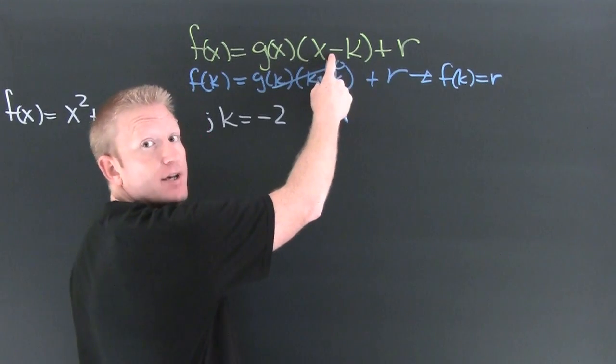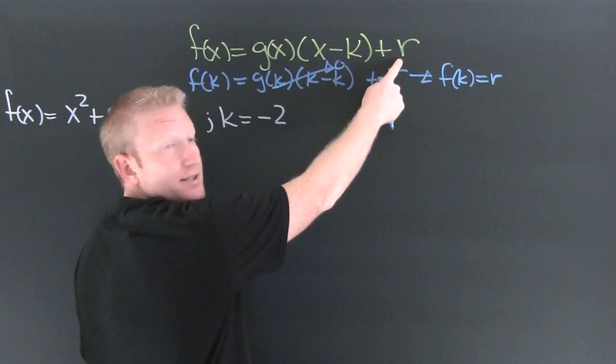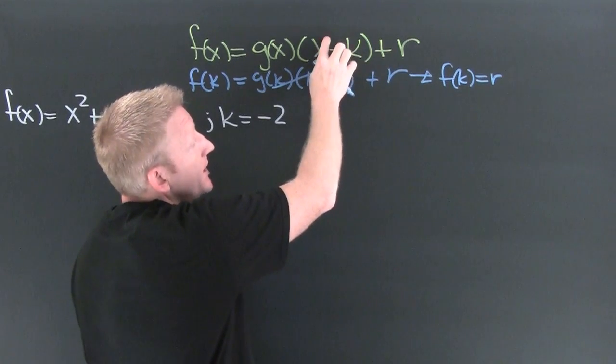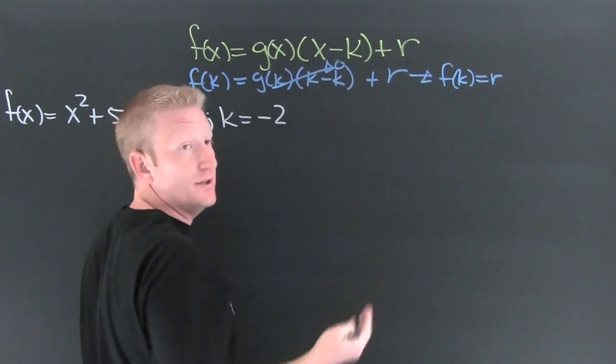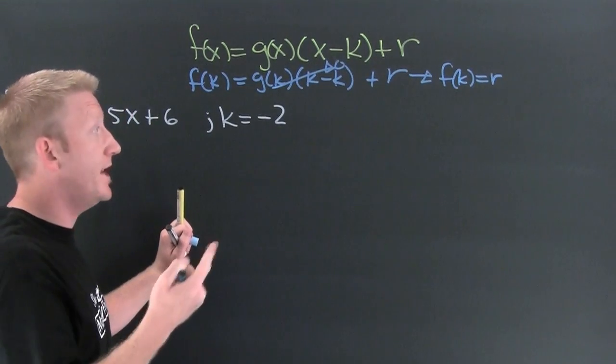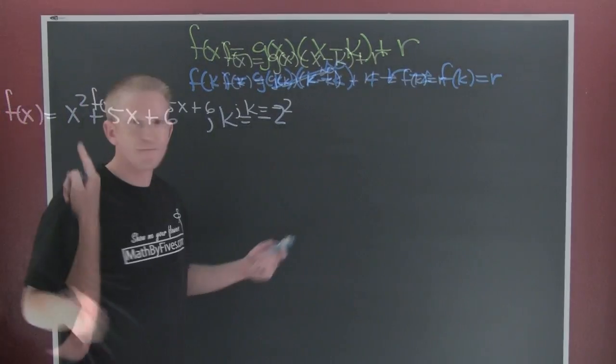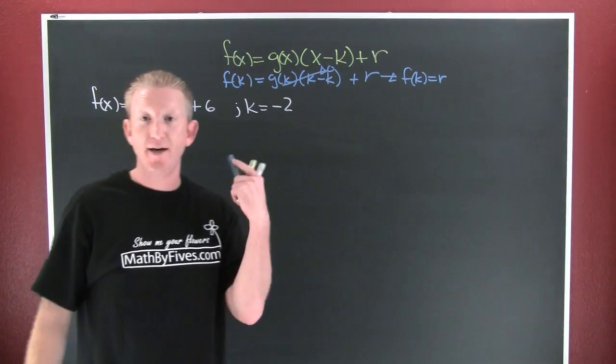When you're dividing by a special linear factor, that means your remainder is going to be degree less than this, but that's one. So the only possible degree of our remainder is going to be zero, making it a constant, which means evaluating that formula in this example.